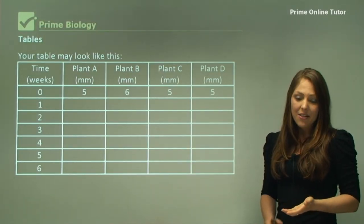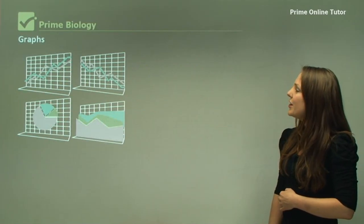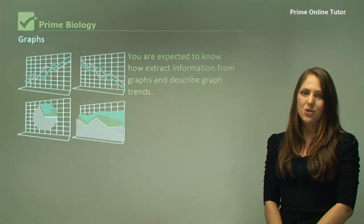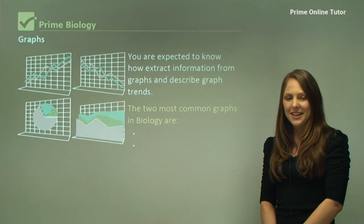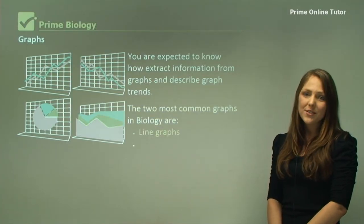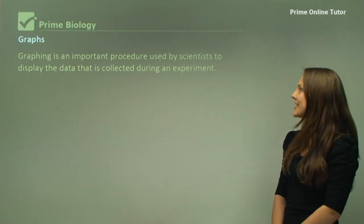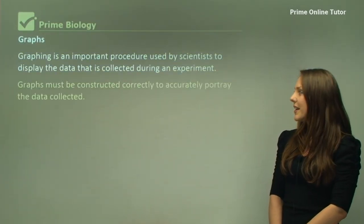You're expected to know how to extract information from graphs and describe their trends. The two main graphs in the HSC are line graphs and column graphs. Graphing is an important procedure used by scientists to display data collected during an experiment. They must be constructed correctly to accurately portray the data collected.